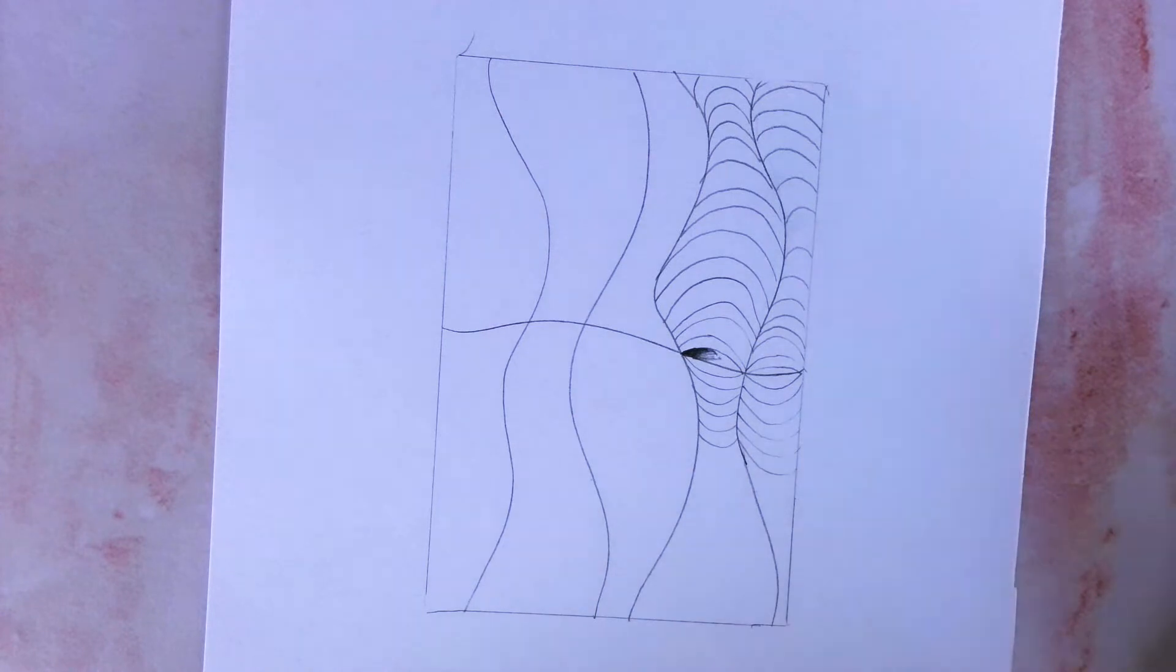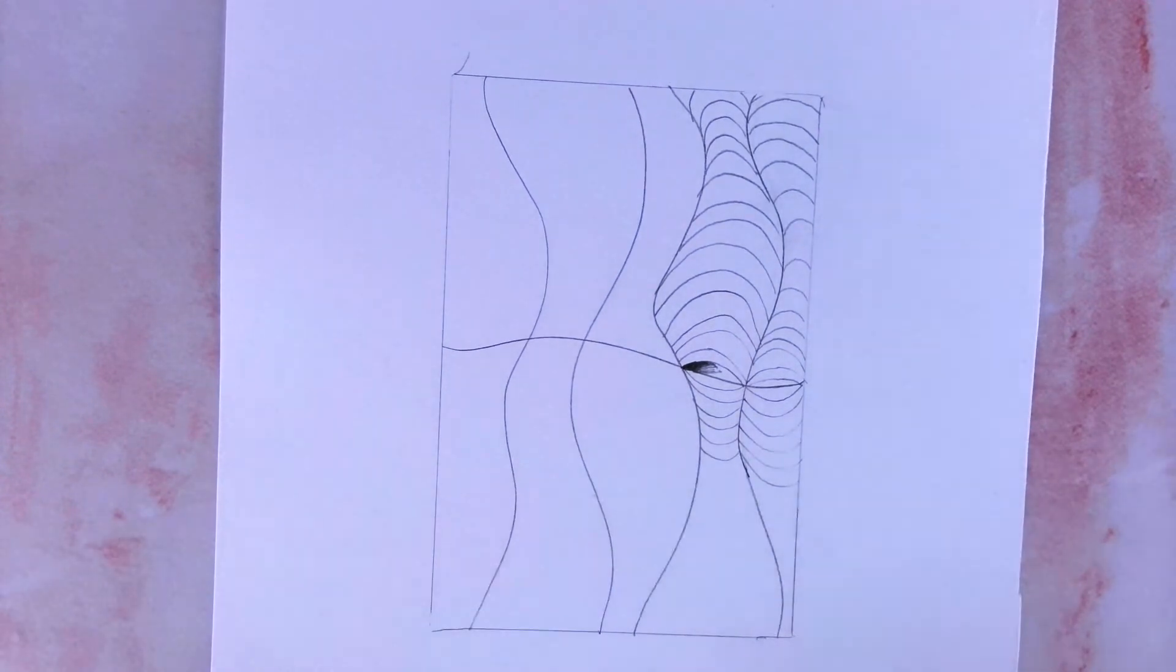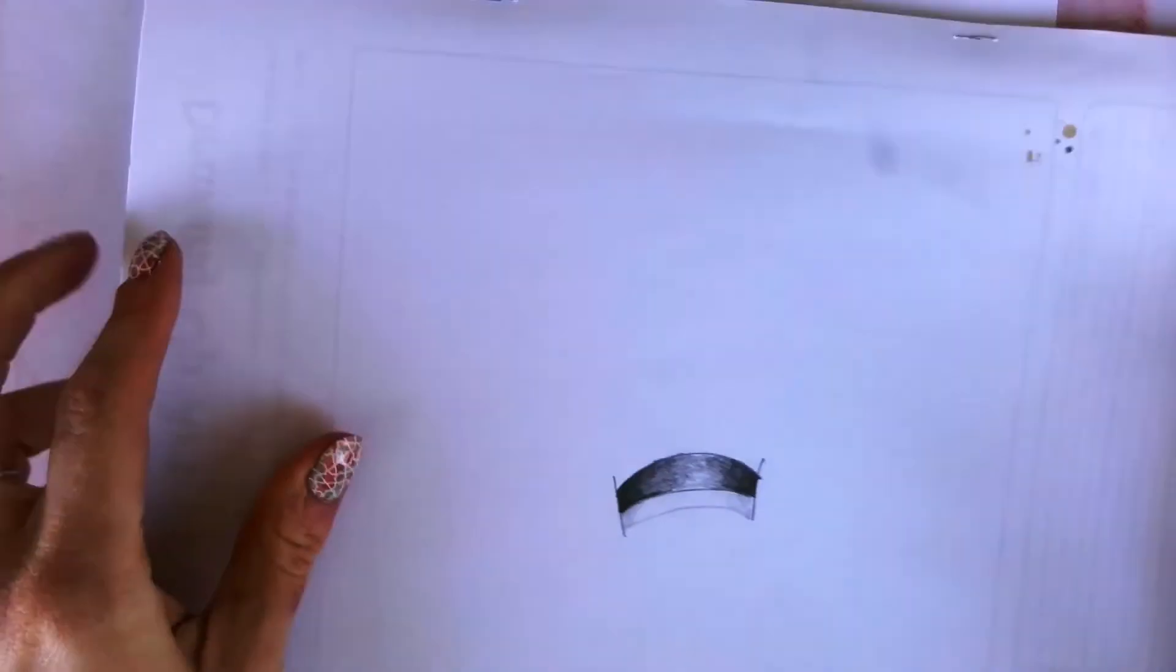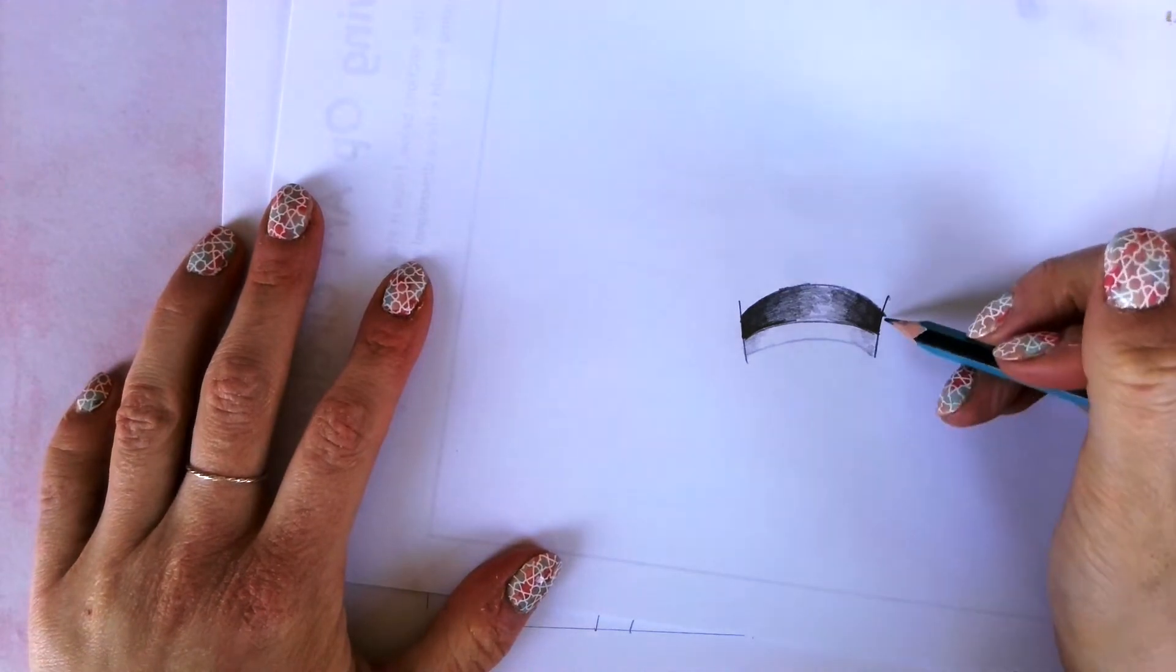Now to really challenge yourself, try doing this task using shading with a pencil. It will be much more challenging, but you'll get a much more effective result. So as you can see, start the task the same way. And then when you're doing your shading on all of the sections, we have an example here.